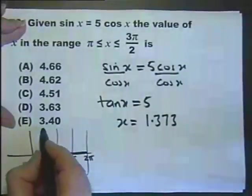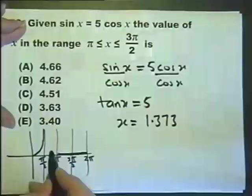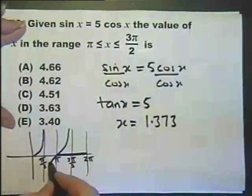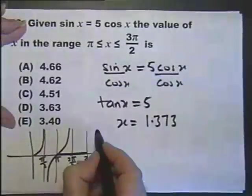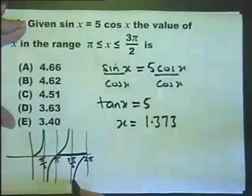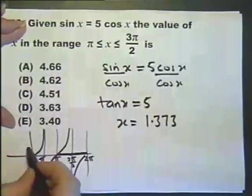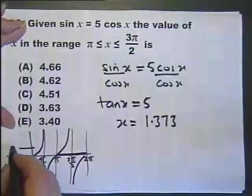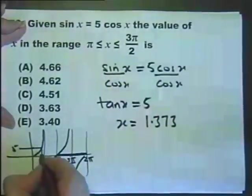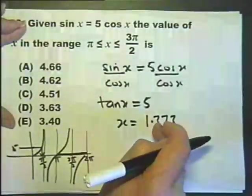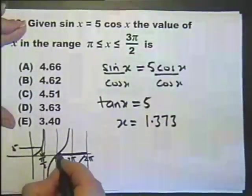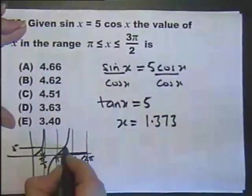The tangent graph looks something like this. 5, just as a gauge, is there. So that answer is actually that one there. But I want an answer between there and there so I'm looking for that answer there.